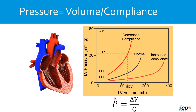Without knowing the compliance, the pressure may not estimate the end-diastolic volume. Take a look at these three graphs where we have decreased compliance in the first one, normal compliance in the second one, and increased compliance in the third one. If you measure a pressure of 10, that would indicate a low end-diastolic volume in the patient with decreased compliance, normal in the patient with normal compliance, and high end-diastolic volume in the patient with increased compliance. Without knowing the compliance, it is difficult to utilize the pressure to estimate the end-diastolic volume.